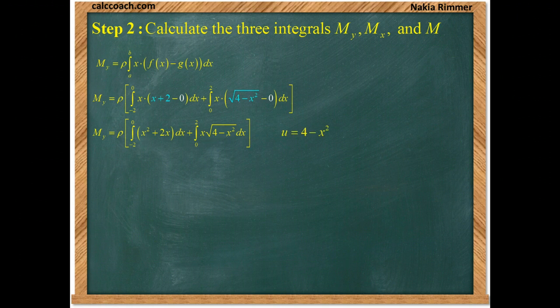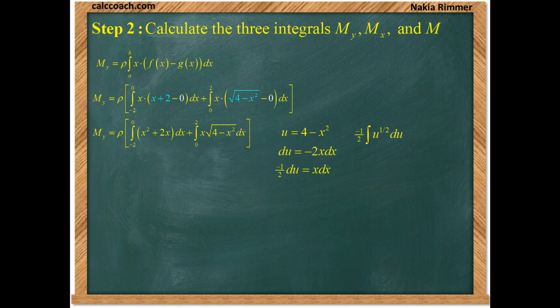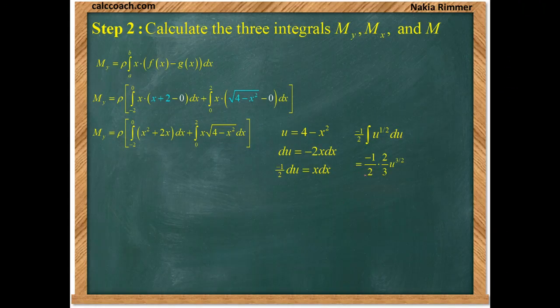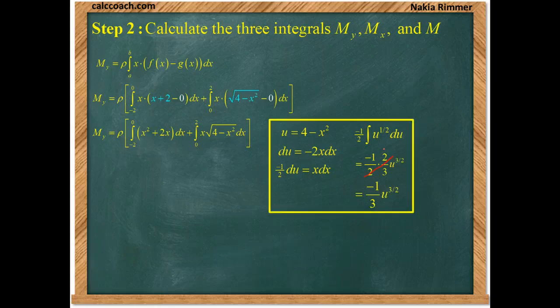The first integral uses the power rule in reverse. The second requires u-substitution. Let u equal 4 minus x squared, so du equals negative 2x dx. Negative one-half du takes the place of x dx. We'll have negative one-half du with the square root of 4 minus x squared becoming u to the one-half. The antiderivative is u to the three-halves times two-thirds; canceling the twos gives negative one-third u to the three-halves.